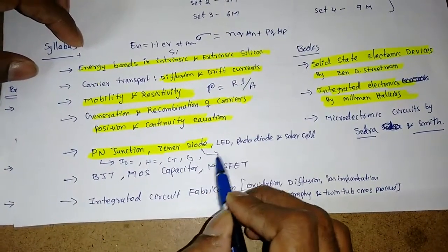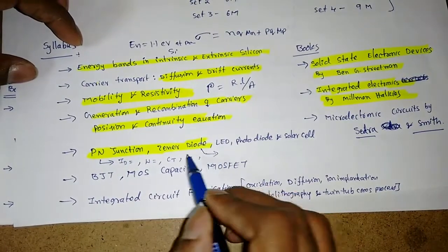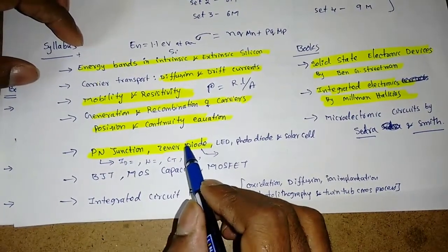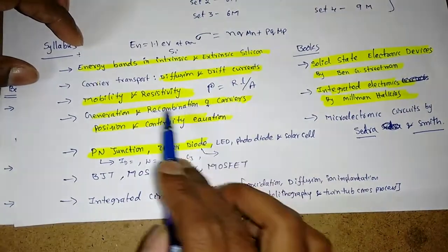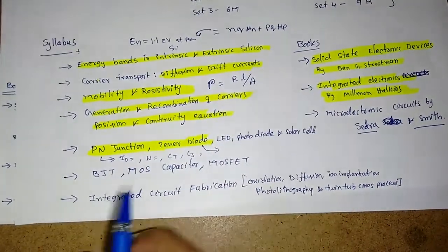Similarly, for Zener diode, there are two mechanisms: avalanche multiplication and Zener breakdown. There are some formulas for those. This is about semiconductors, PN diode, and Zener diode.